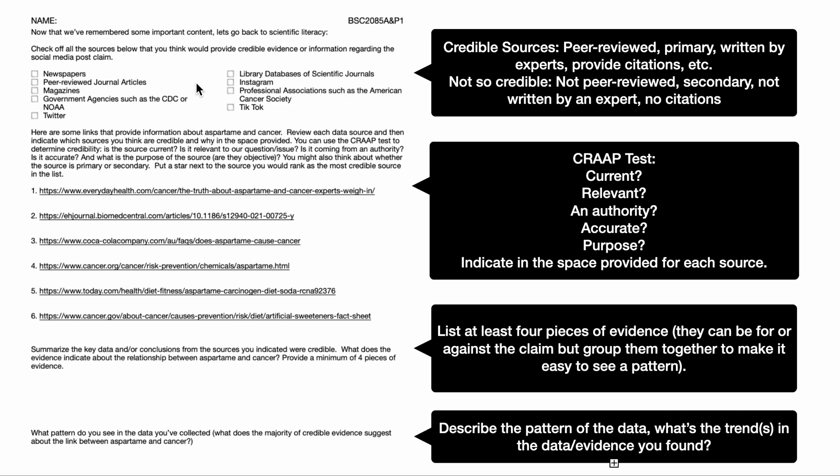Secondary sources are written by someone who didn't do the research. Again, they could be really good — like National Geographic Magazine or Popular Science — but we can't be 100% sure. We don't always know if the writer in a secondary source is an expert in the field or a journalist learning about something entirely new, which might mean there are errors in their writing. Also, if there are no citations, that's always worrisome because we don't know where they're getting the information from and can't check it for validity or accuracy.